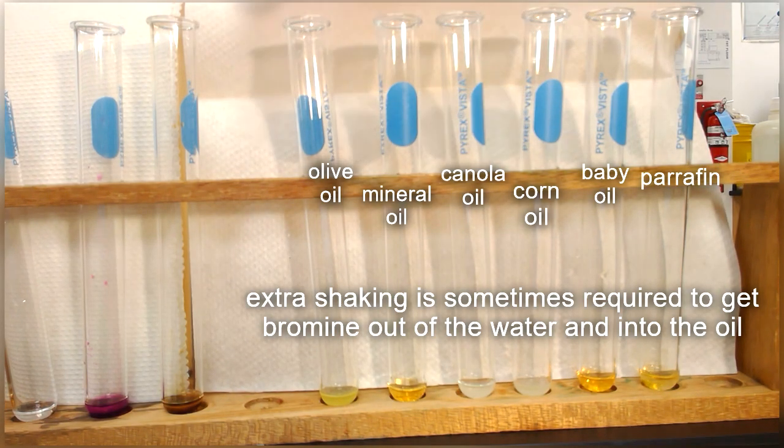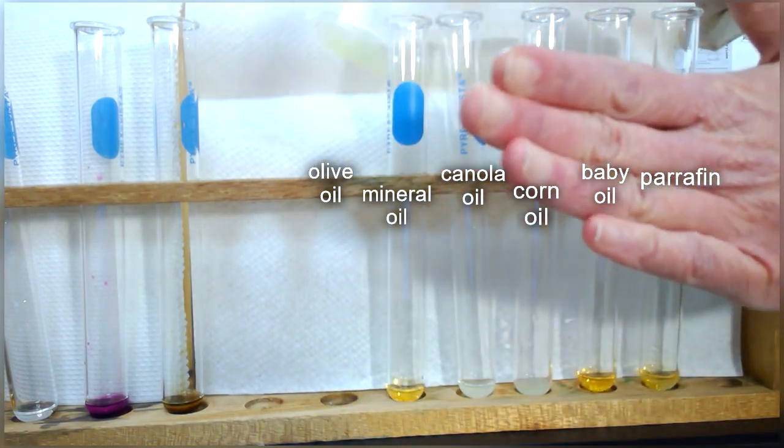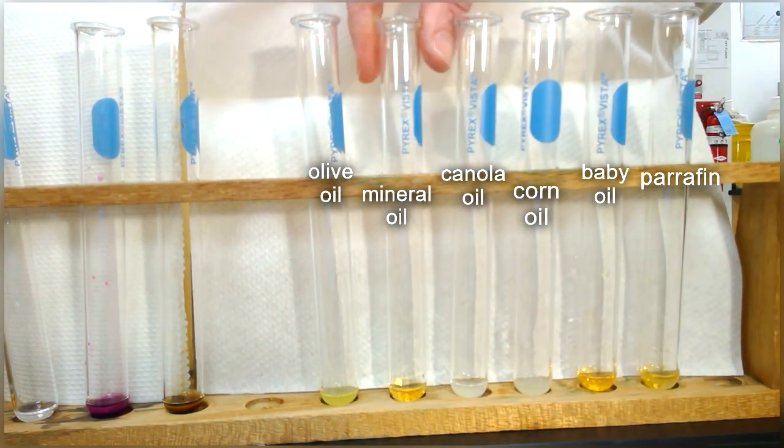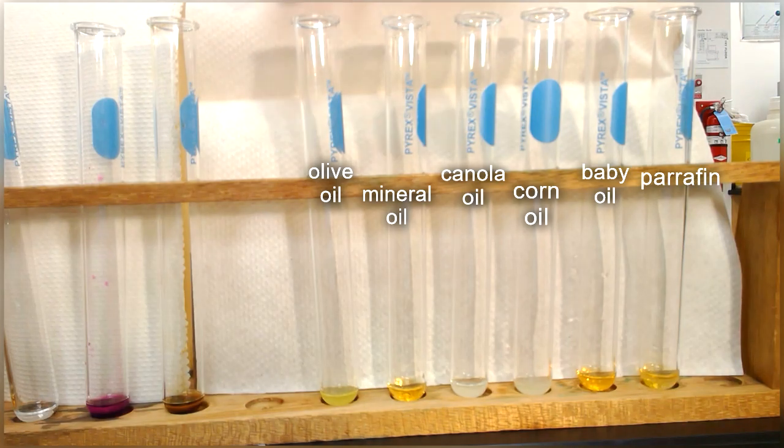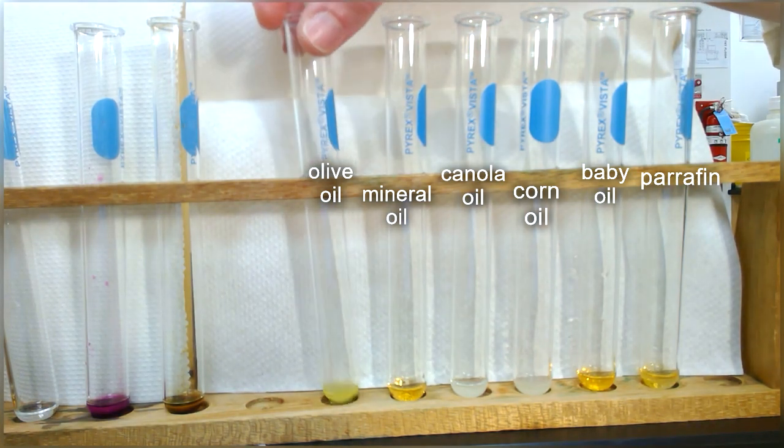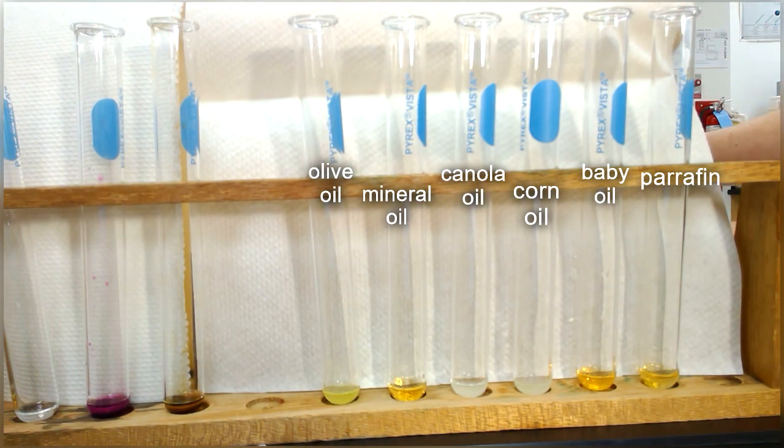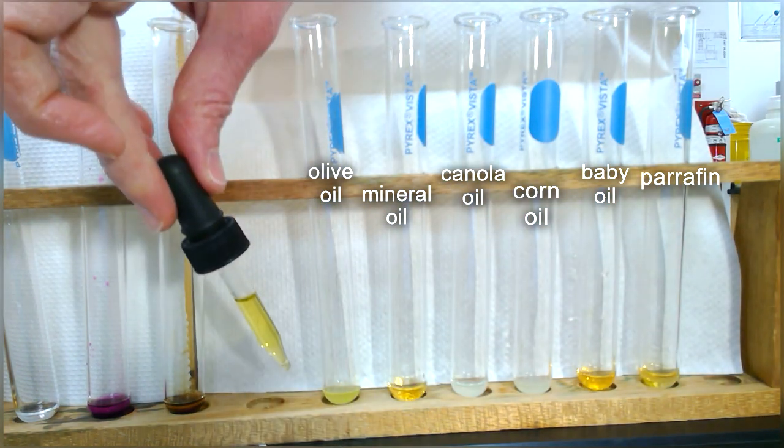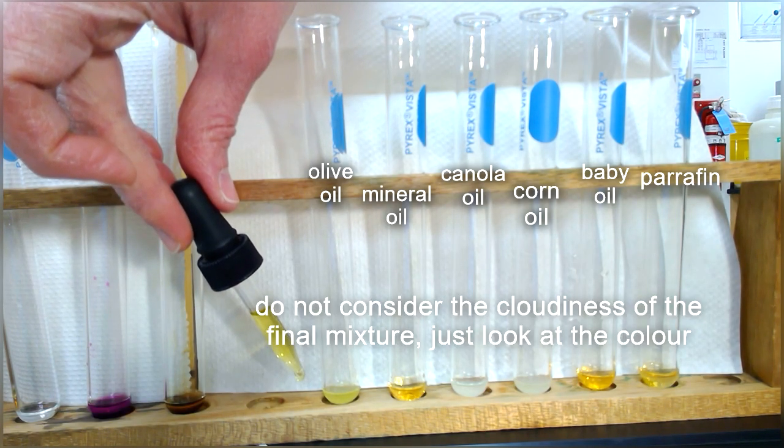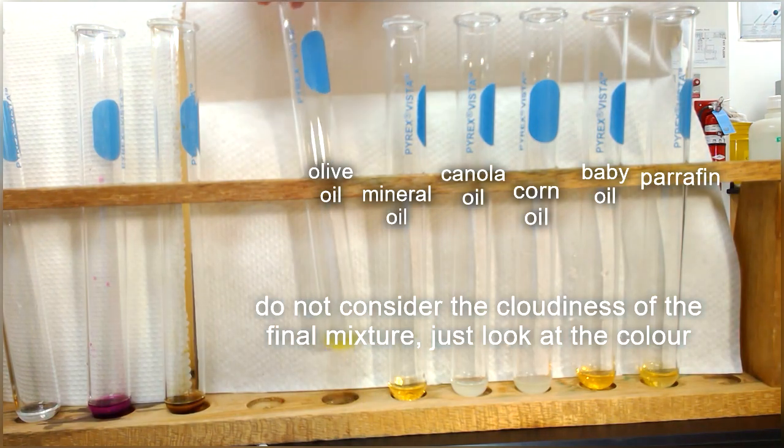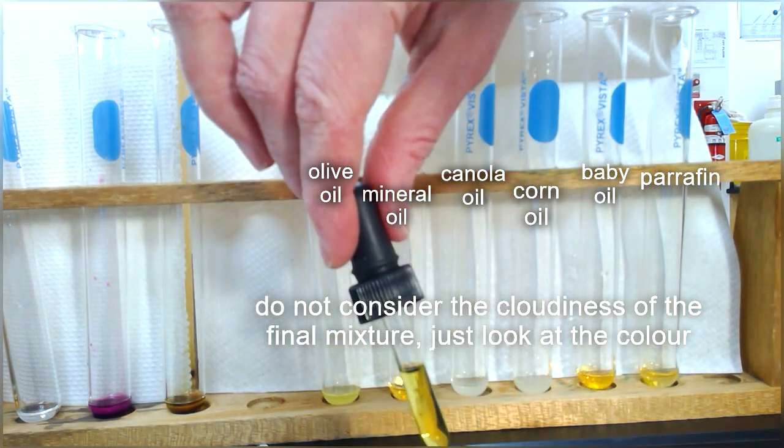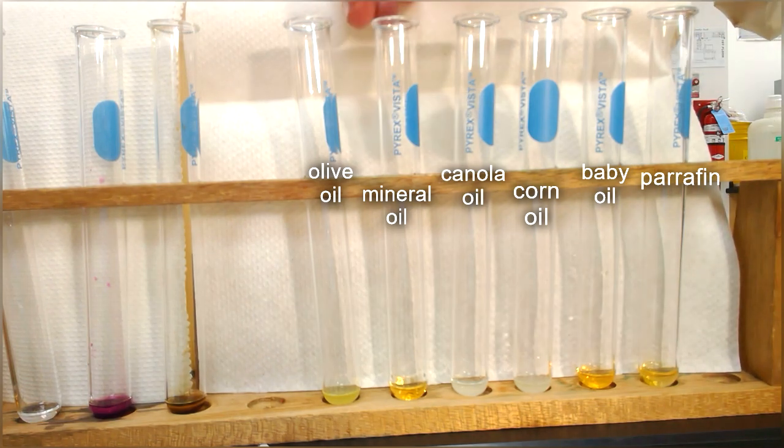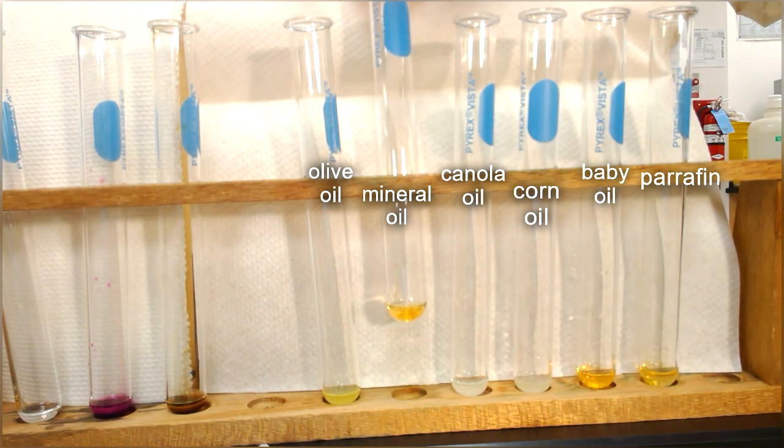So if you take a look at the results after some agitation and a bit of energy that I'm adding by agitating there, you can see the first oil, olive oil. It was a yellowy color to start with. Maybe you can take a look in the actual dropper here. The olive oil itself is a yellowy color. And so here's the color afterward. It is similar to the original olive oil color. Next, we have mineral oil. That's the color of the mineral oil, still orange.